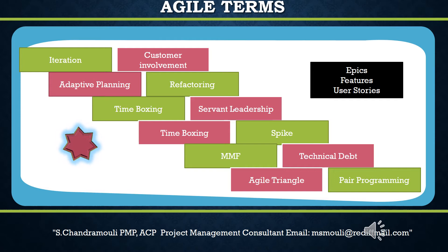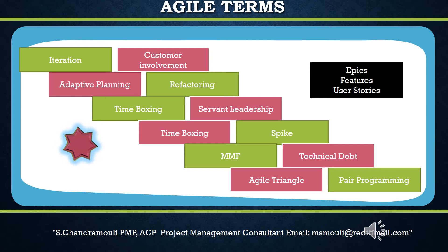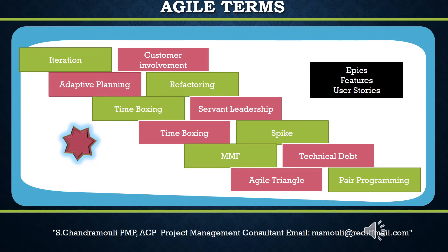Sixth, customer involvement: the agile manifesto recommends active customer participation and involvement rather than time and effort expended on negotiating contracts. Agile software development stresses evolving requirements accomplished by direct user involvement in the development process. Rapid iterations mean small, frequent releases. Customer involvement in the software development process is very critical to the success of the project. Agile methods state that the customer should be part of the development process from analysis and design to implementation and maintenance.